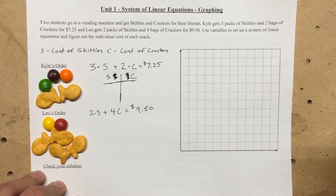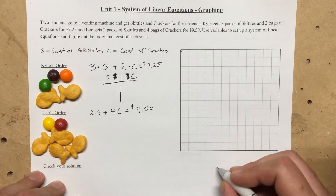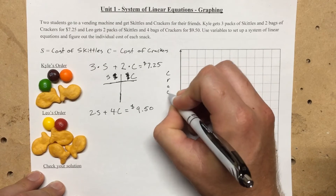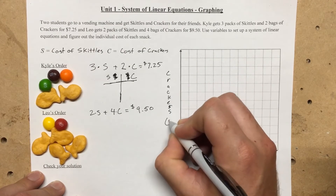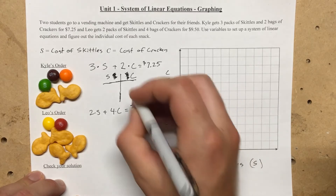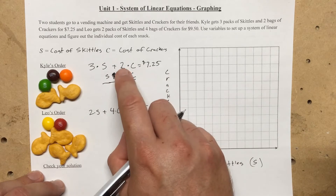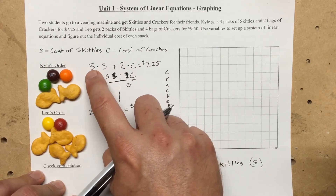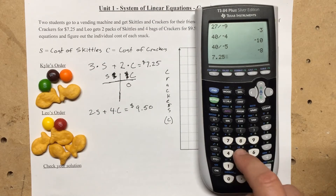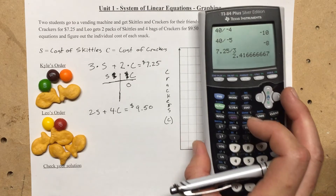To find the intercept on the c axis, if we plug in zero dollars for our cost of crackers, two times zero is zero, so we just need three times s equal to 7.25. We go 7.25 divided by three, and that gives us approximately 2.42. And now let's find our intercept on the crackers axis — plug in a zero for s, and we'll be left with two times c equals 7.25. So 7.25 divided by two gives us 3.625.